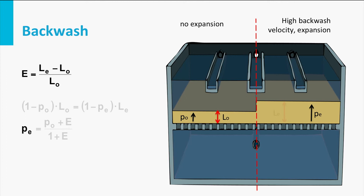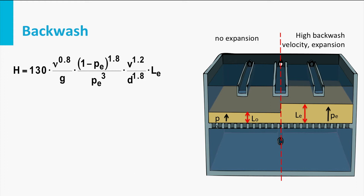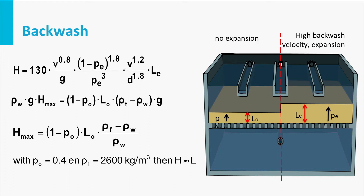To determine the resistance during backwashing, an empirically determined equation can be used, resembling the Carmen-Kozeny equation. When fluidization is reached, the pressure drop equals the submerged weight of the filter bed and remains constant with increasing backwash velocity. For sand, expressed in meters water column, this equals the filter bed height.